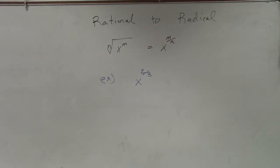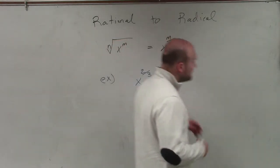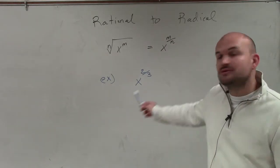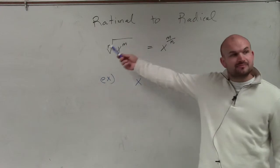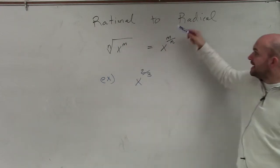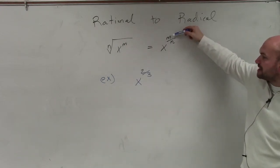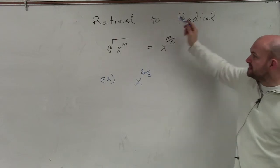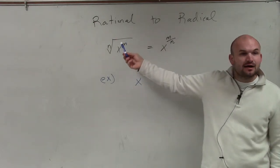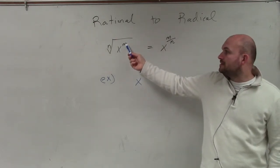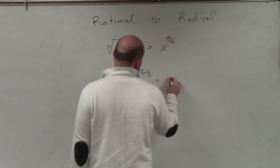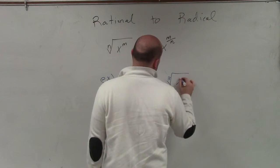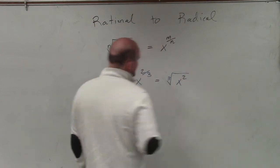So basically, ladies and gentlemen, from knowing this rule, when we have x to the 2 thirds, following along with this, your denominator is basically going to be your root, and your numerator of your fraction of the power is basically going to be the power inside of your base, inside the radicand. So basically, this is just going to translate to the cube root of x squared.